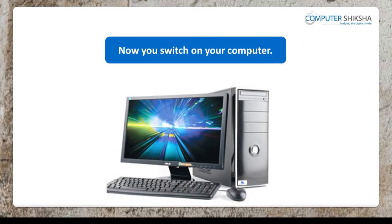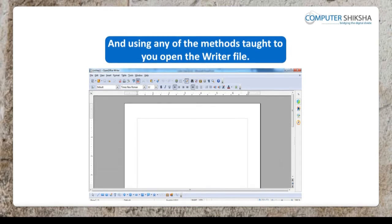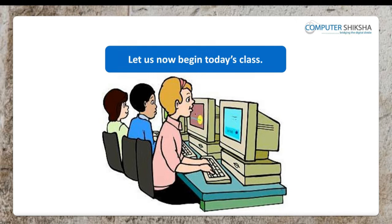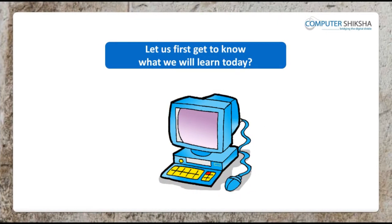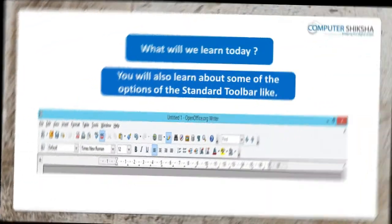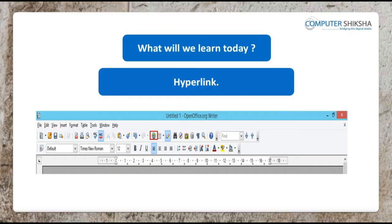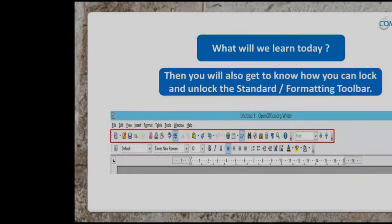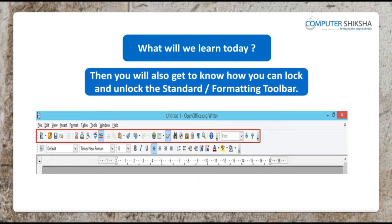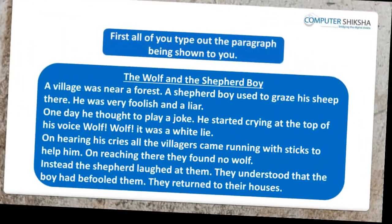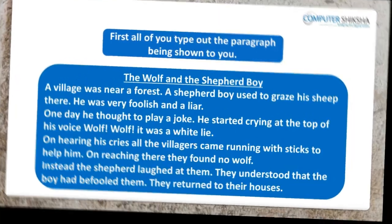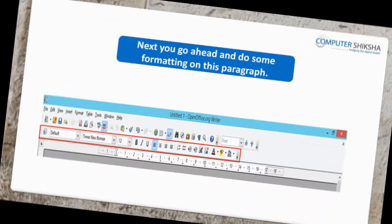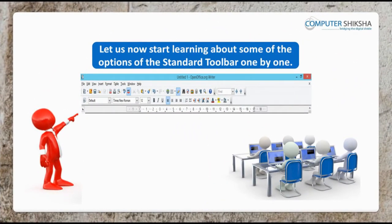Now switch on your computer and using any of the methods taught to you, open the writer file. Let us now begin today's class. What you will learn today is as follows: how do we use the standard toolbar, some of the options of the standard toolbar like new, save, email as document, hyperlink and indent, and also how you can lock and unlock the standard or formatting toolbar. First, type out the paragraph being shown to you, then go ahead and do some formatting on this paragraph.